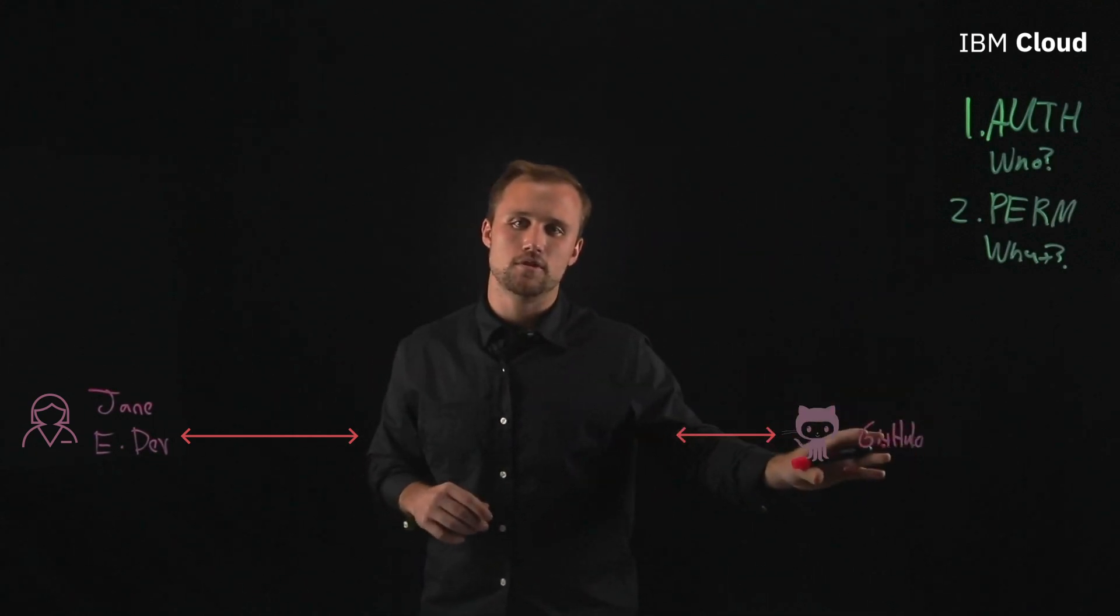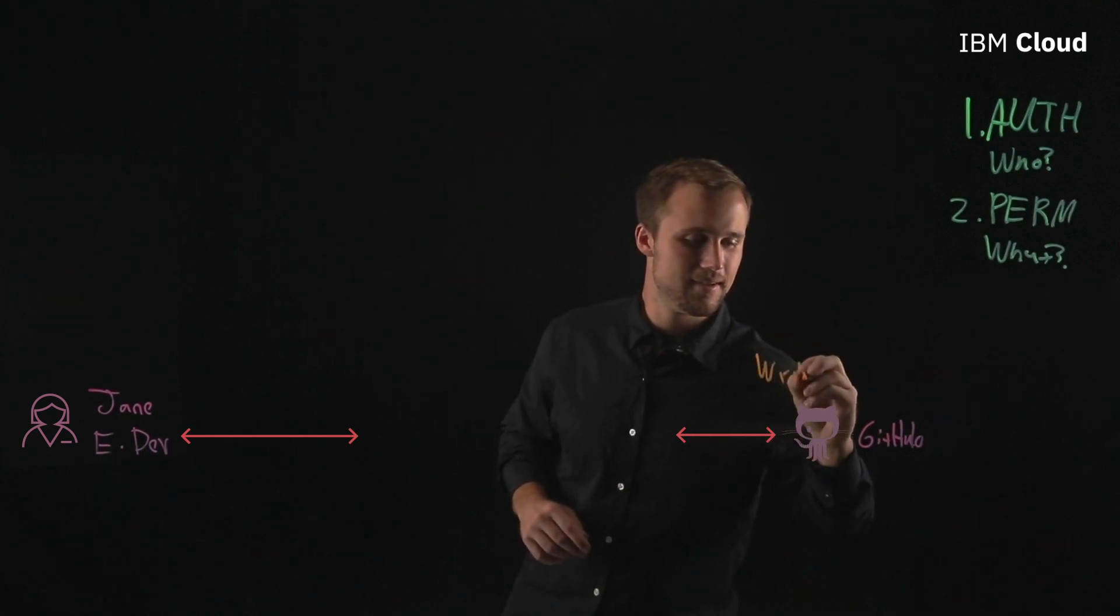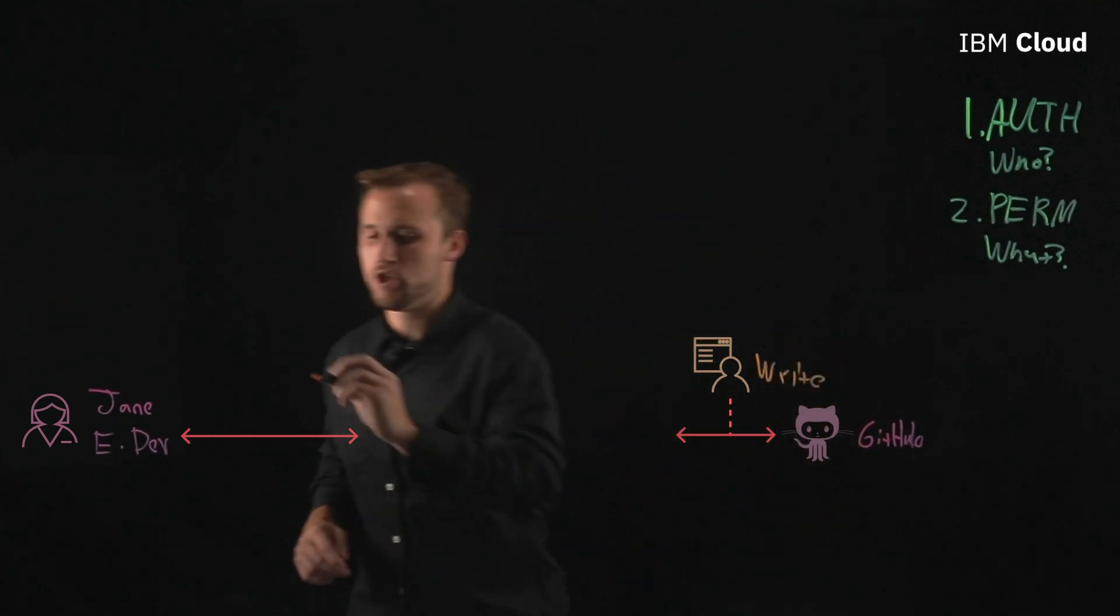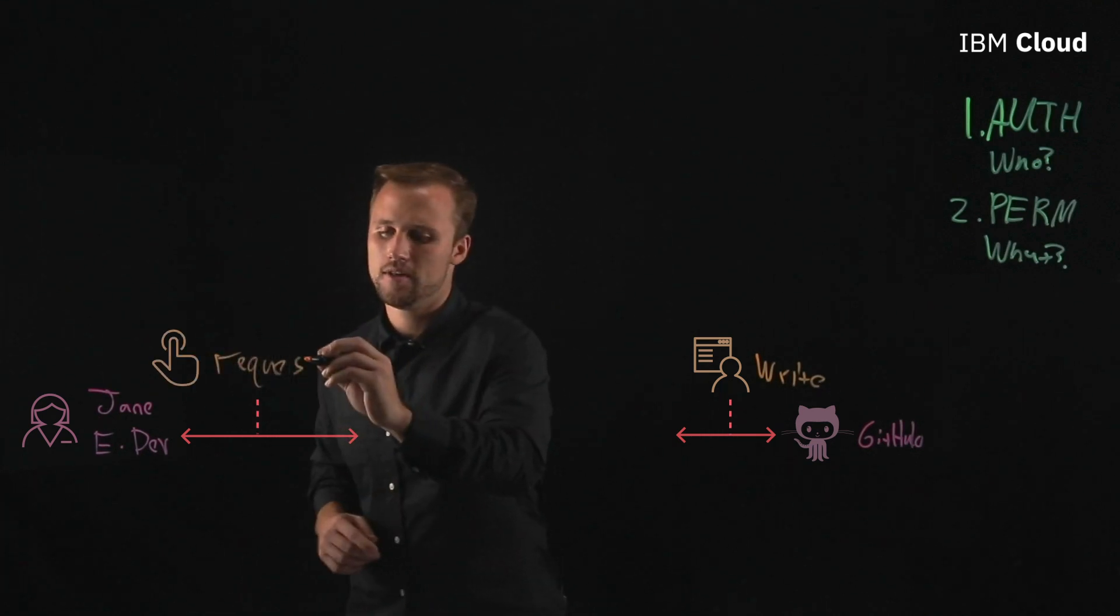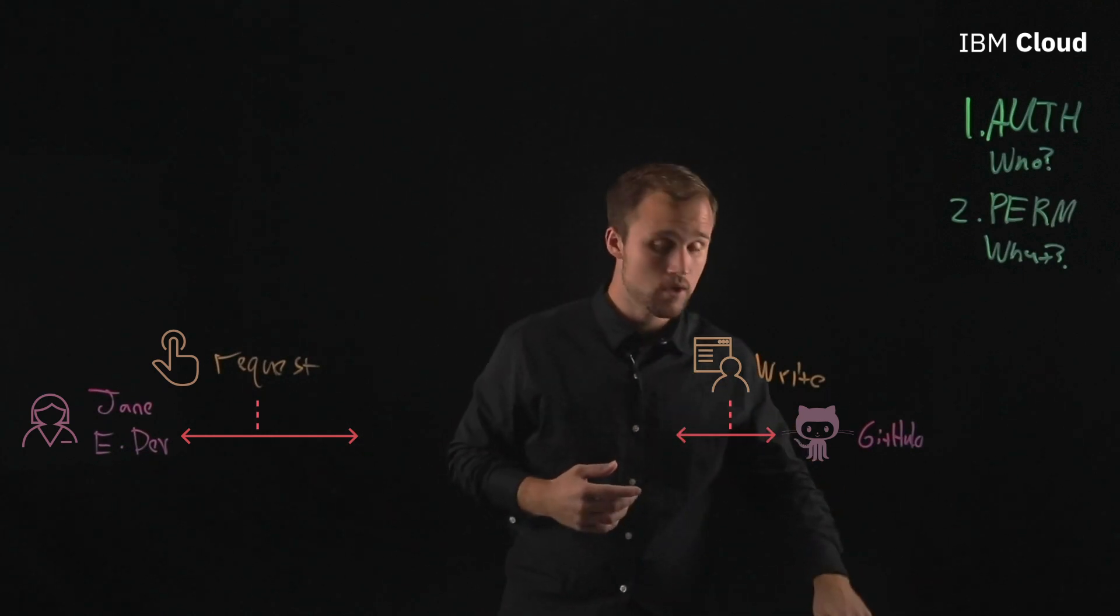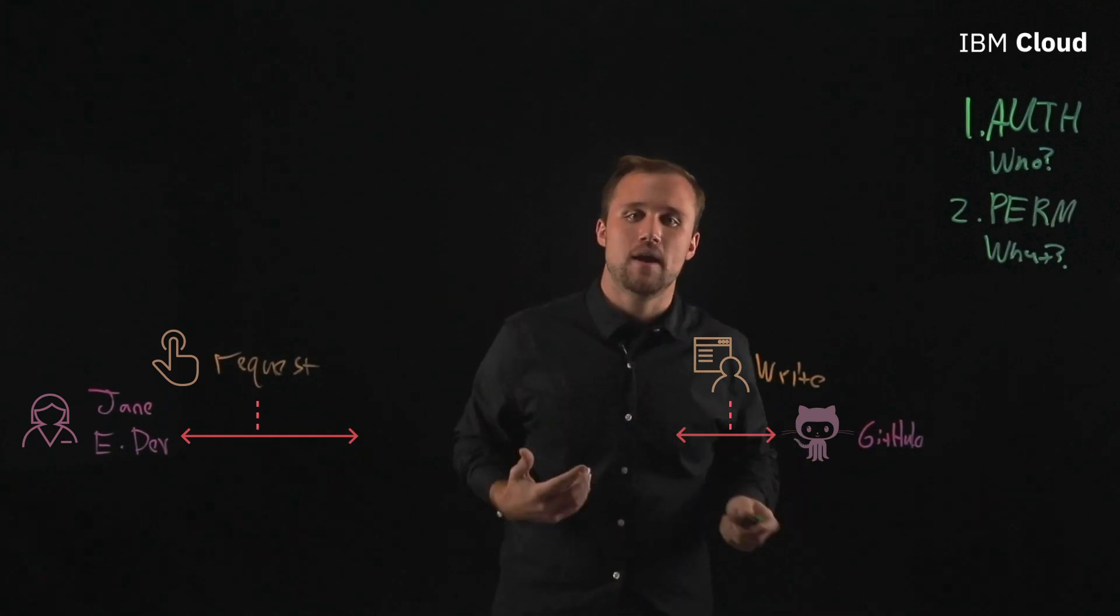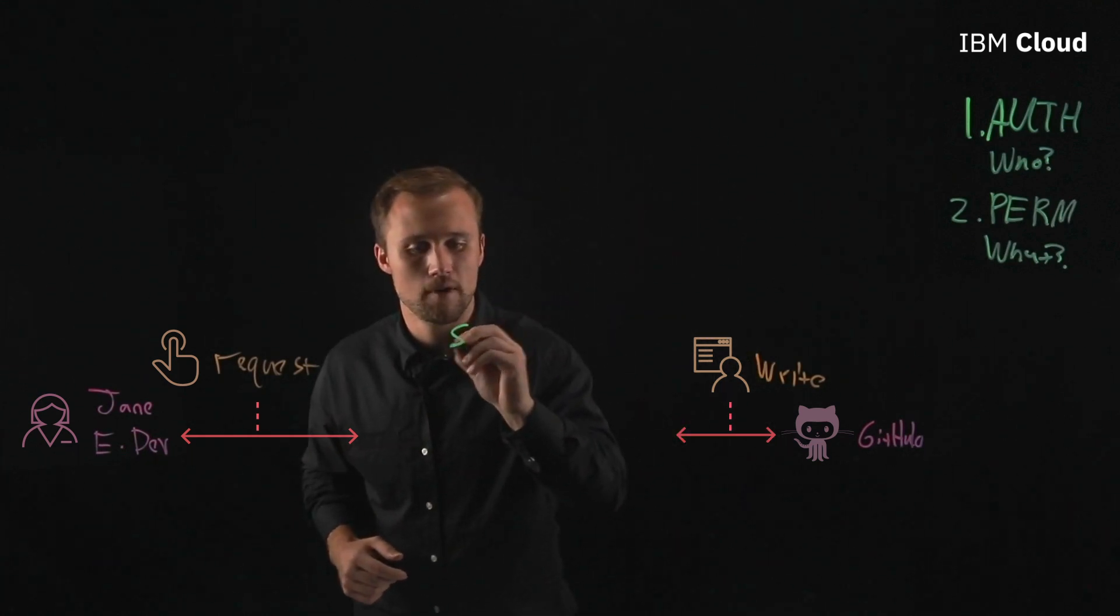So what she needs to be able to do is have write access. And so she's going to need to request the information that's going to give her access to that write role.